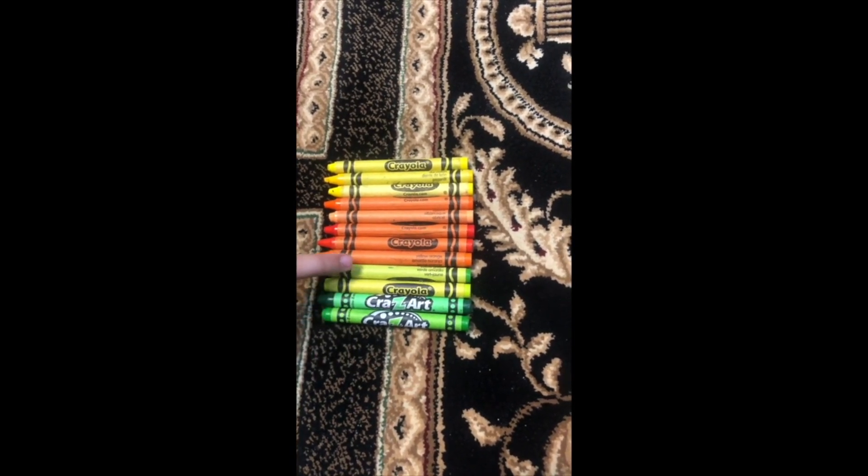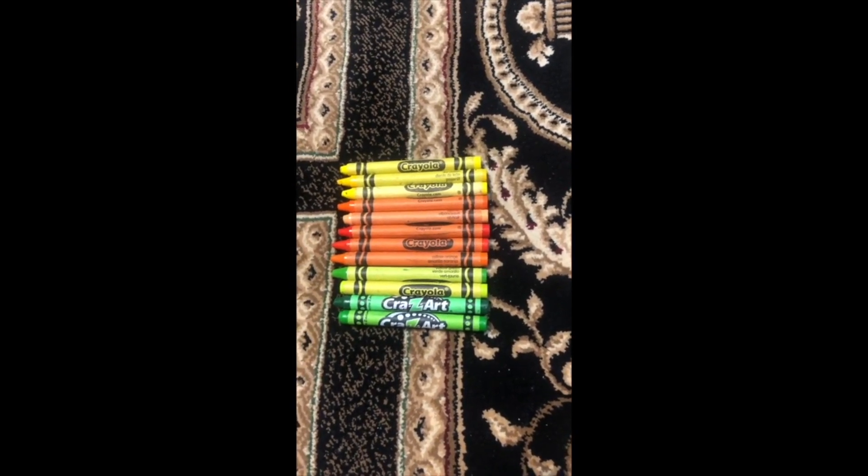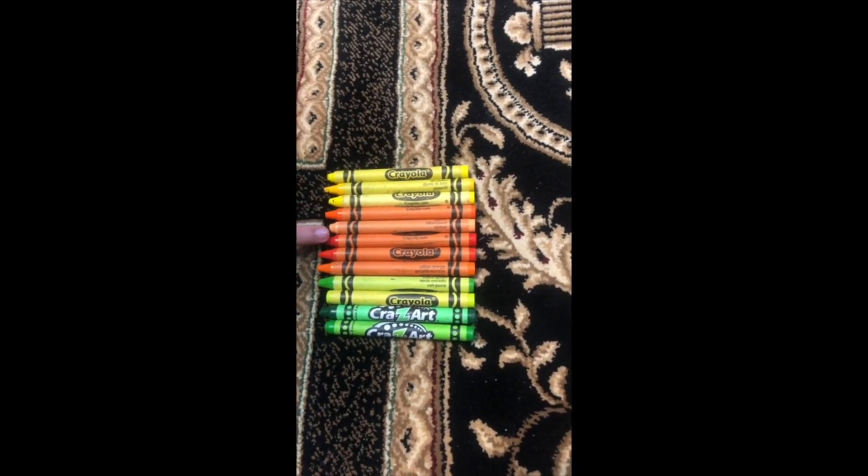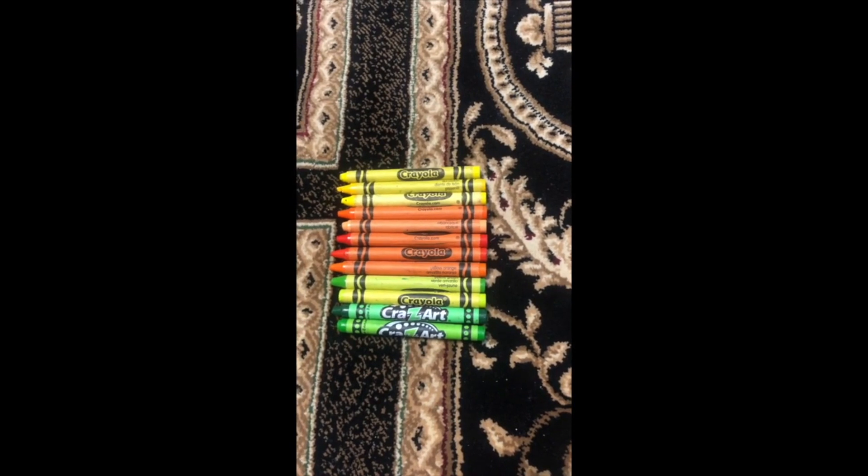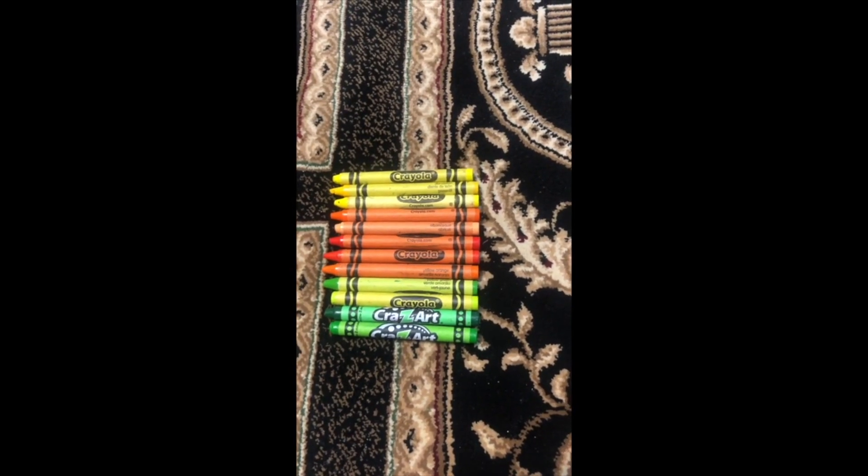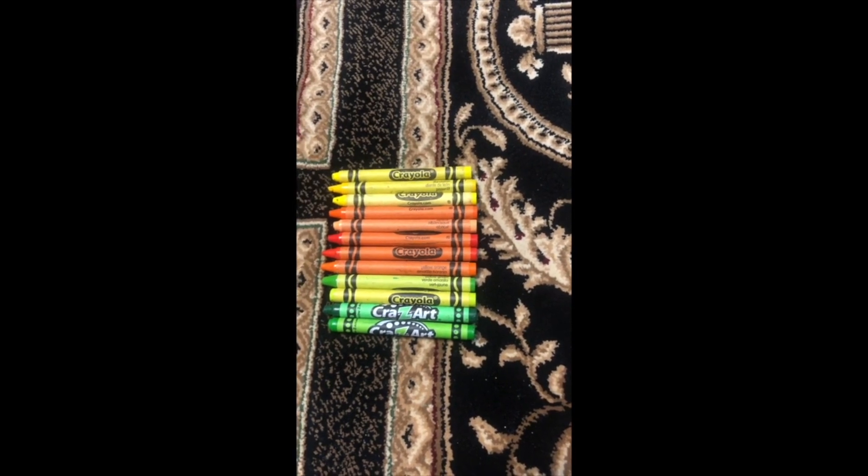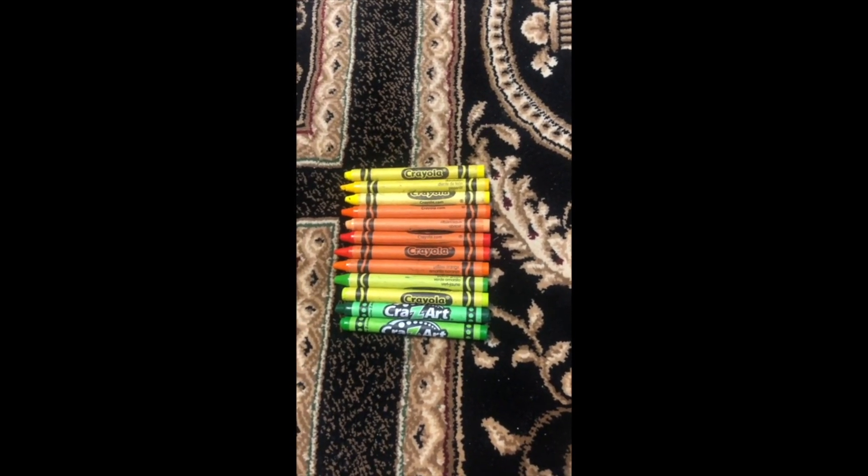One, two, three, four. So four out of twelve, or four-twelfths. How about orange? One, two, three, four, five. So five out of twelve, or five-twelfths. How about yellow? One, two, three. So three out of twelve, or three-twelfths. Good job!